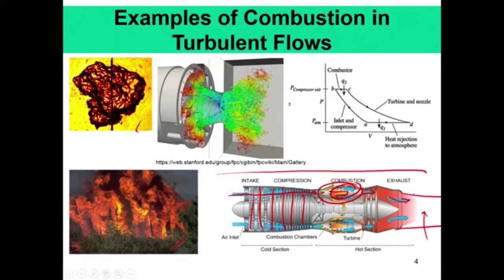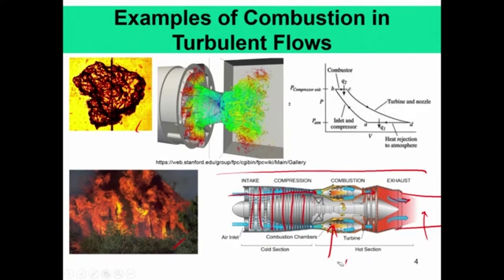The combustor might look small, but this is the point where you have the highest pressure in the engine. When the flow is compressed, it occupies a very small volume — that is why the combustor occupies a small area. These are the different examples of turbulent flows in different engines.